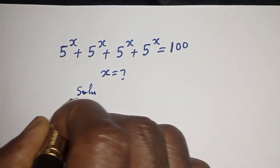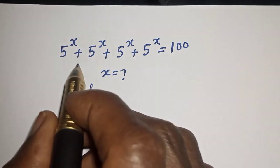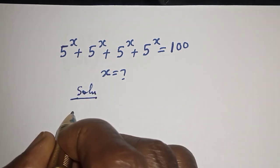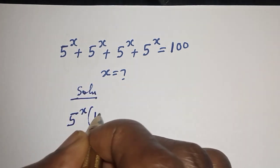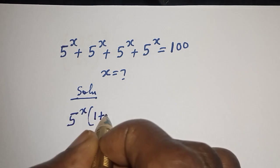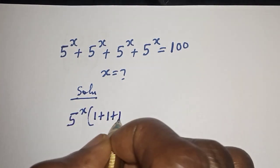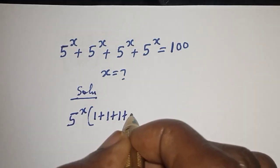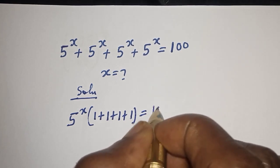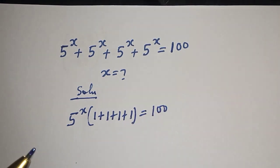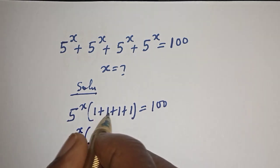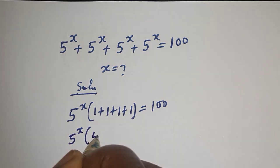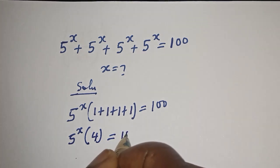Solution. 5 raised to power s is common — let's bring it out. 5 raised to power s, bracket 1 plus 1 plus 1 plus 1, that is 4, is equal to 100.